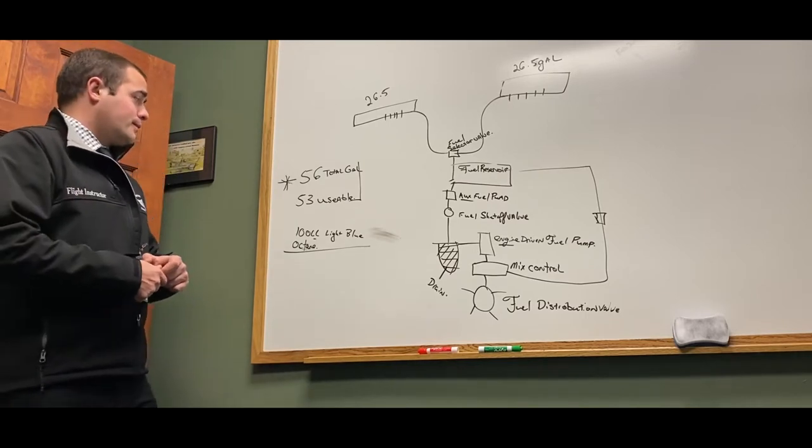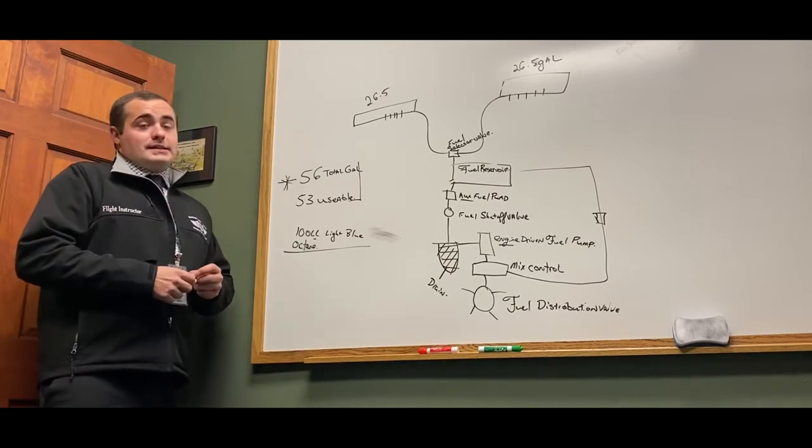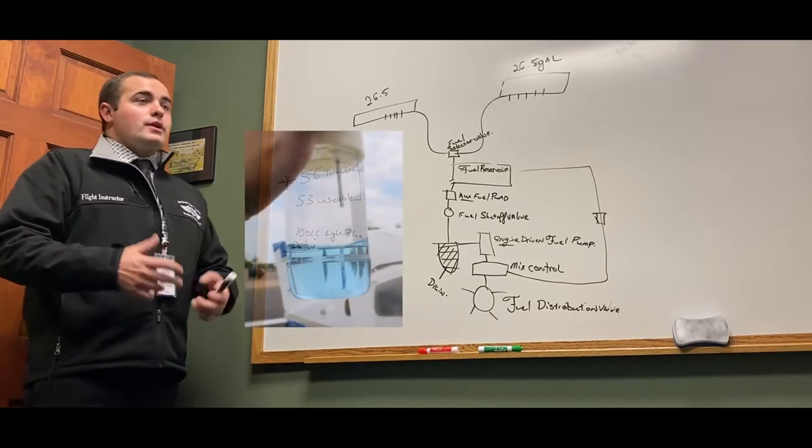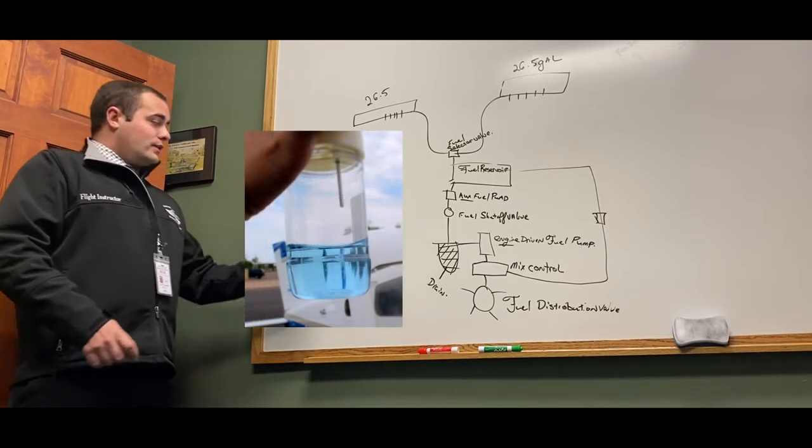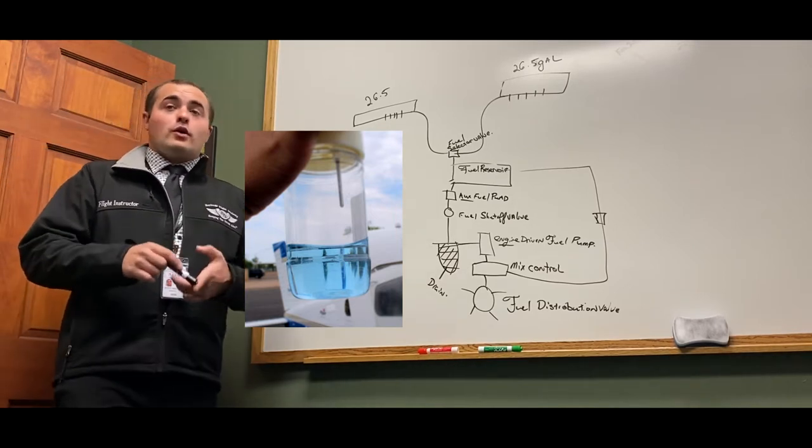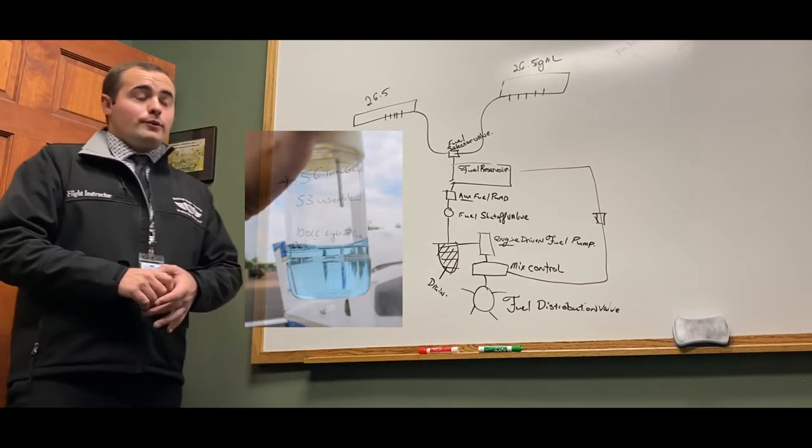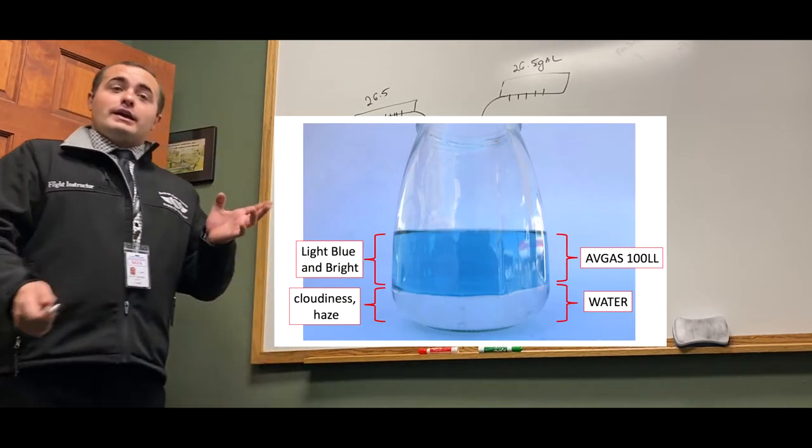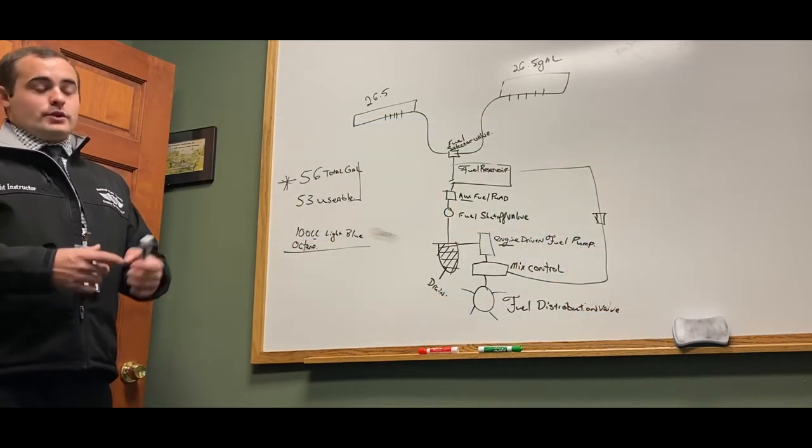What type of fuel can we use in our Cessna? We use 100 octane low lead. Low lead means there's a small amount of lead in it to help with the ignition of the engine and the color is light blue. So if you were to strain your Cessna when checking for water, rust, or debris in your fuel and you saw that it wasn't light blue, you might want to check in your POH that it is a suitable fuel for the Cessna.